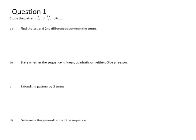Find the first and second differences between the terms. So that means we need to find out how much we've added to 5 over 2 to get 9, and how much we've added to 9 to get 39 over 2, etc. In order to do that, we say 9 subtract 5 over 2. Remember that 9 is 18 over 2, so 18 over 2 subtract 5 over 2 is 13 over 2.